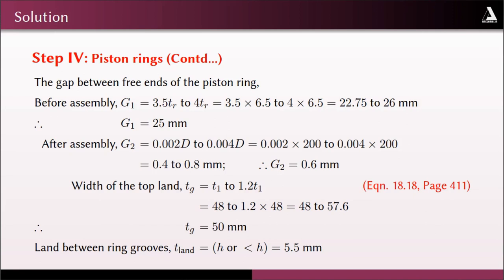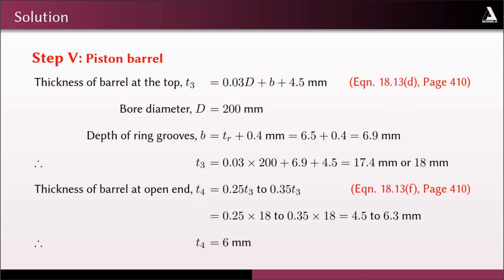Width of the top land Tg (eq. 18.18, page 411) should be between T1 and 1.2T1 = 48 to 57.6 mm; we take Tg = 50 mm. The land between ring grooves (t_land) should be h or less, so we take t_land = h = 5.5 mm.